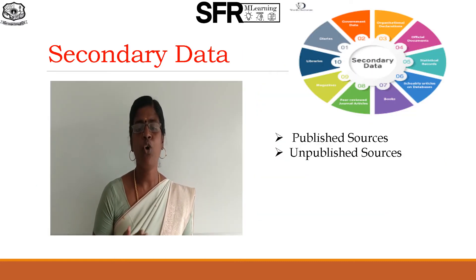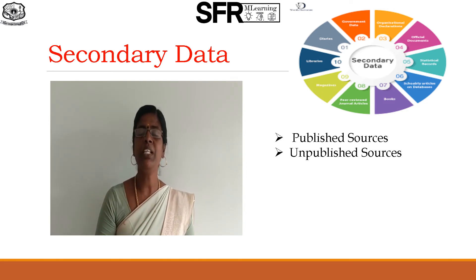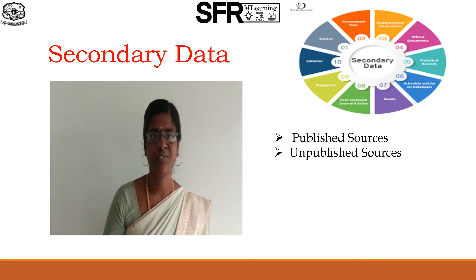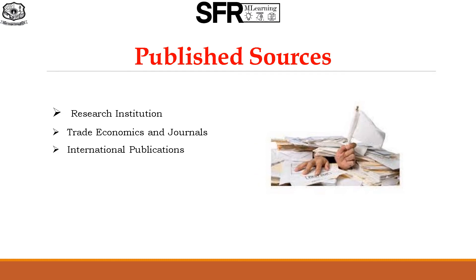Secondary data are not originally collected, but collected from either published or unpublished sources. Published sources include official publications of central and state governments, such as reports and publications of the Central Statistical Organization, National Sample Survey Organization, and Agriculture Statistics of India. Publication of research institutions such as the Indian Agriculture Research, National Council for Educational Research and Training, and Council of Scientific and Industrial Research are also included.